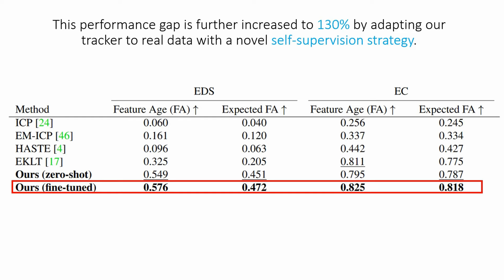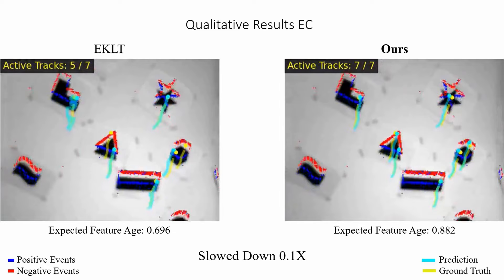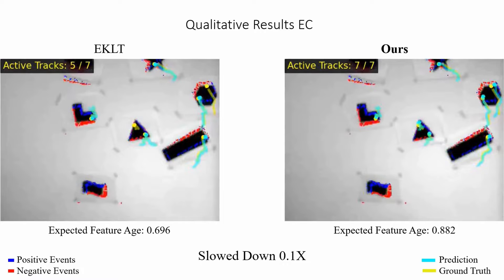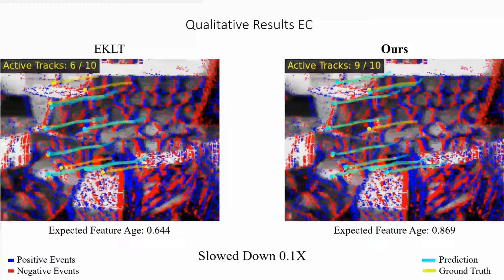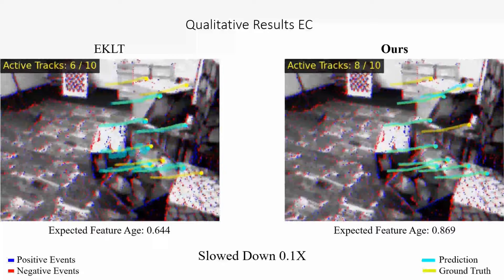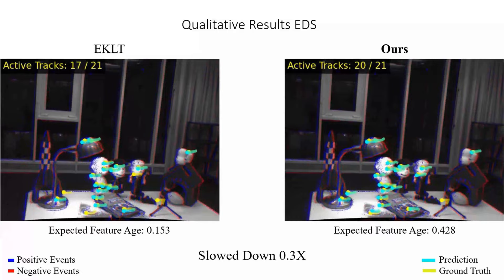On the event camera dataset, our method produces a higher number of smooth feature tracks compared to the closest baseline EQLT. This can be seen in the following slow-motion sequences.